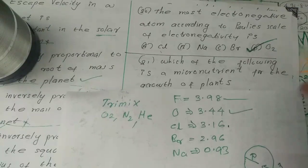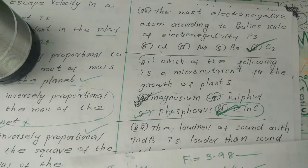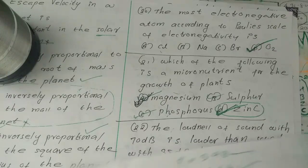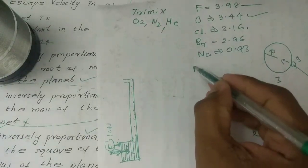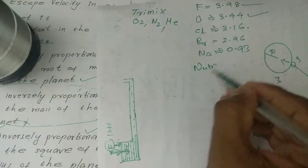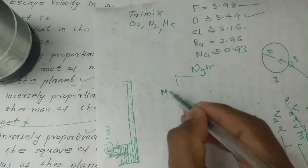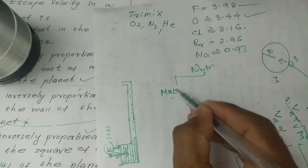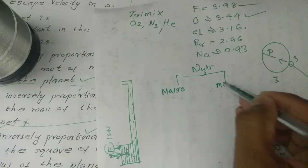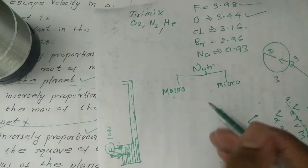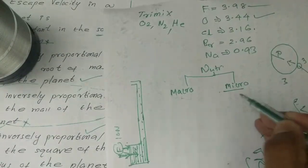So the answer is Option D, fluorine. Which of the following is a micronutrient for the growth of plants? Nutrients are of two types: macronutrients and micronutrients.